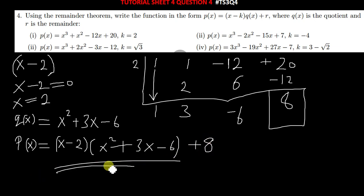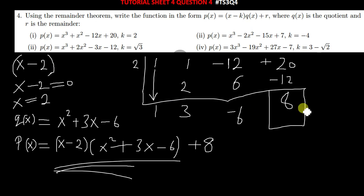This question is not very much different from question 2. The other way you can find the remainder is just by finding p(2). In other words, if this is your p(x), wherever there is x you put 2 — you replace x with 2 — and you are going to get your answer to be 8. The answer that you get is your remainder.